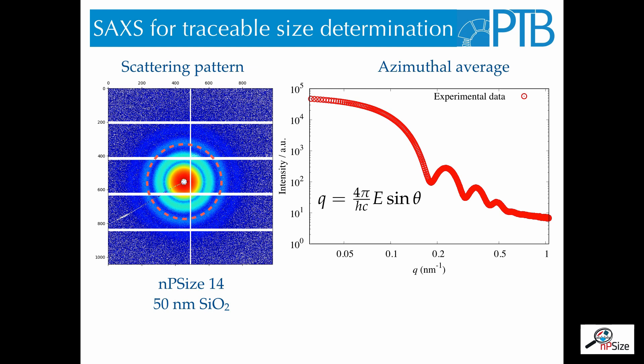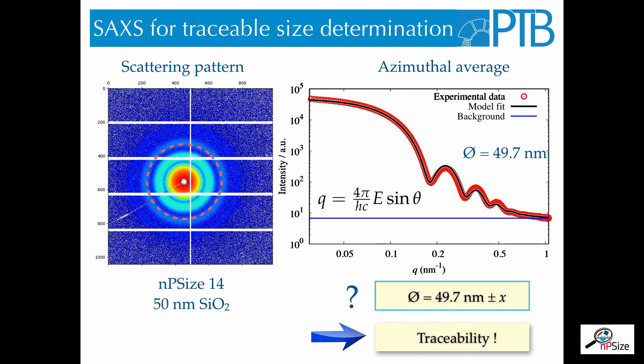In order to determine the diameter of nanoparticles from the scattering curve, we then fit a model to the experimental data. And from this model fit, we get the mean diameter of the particles, in this case 49.7 nm.